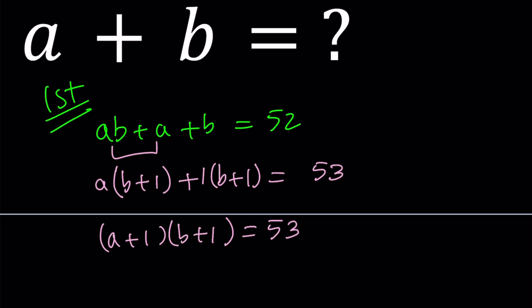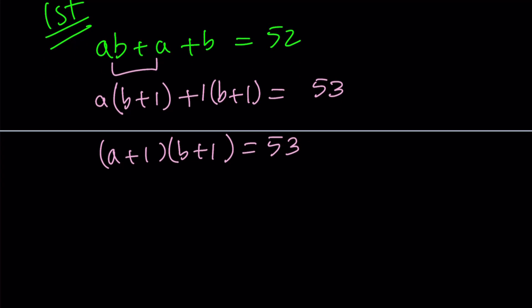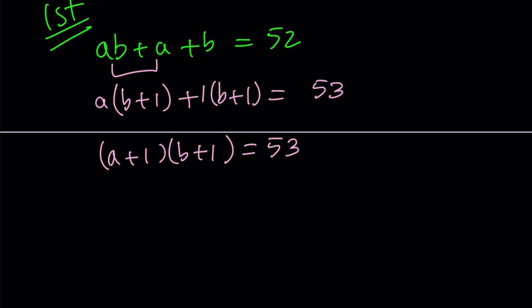So we're going to look at each case, and for each scenario, we're going to find the a and b values. And there's a symmetry. If you want, you can just focus on a and then switch around the values. So, what are the factors? We can have a plus 1 equals 53, and b plus 1 equals 1. It didn't say positive integers. It just said integers, so 0 is okay. Even negatives are okay.